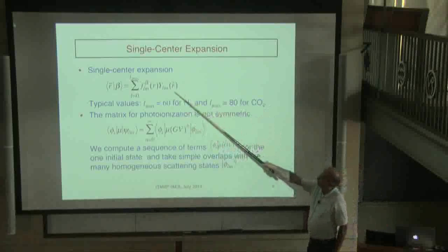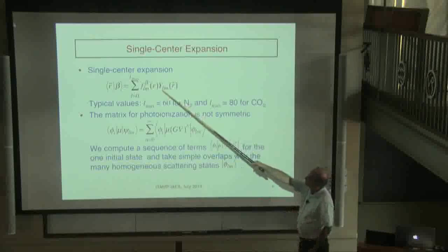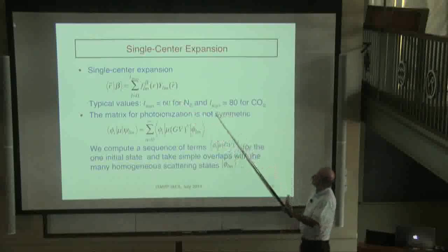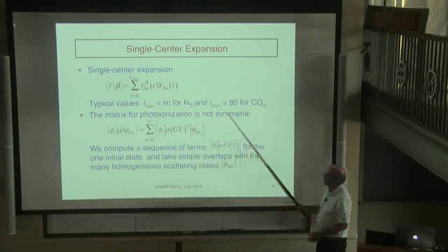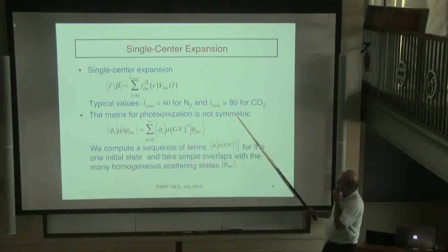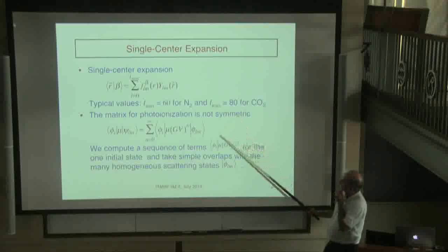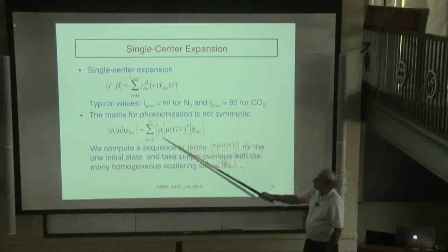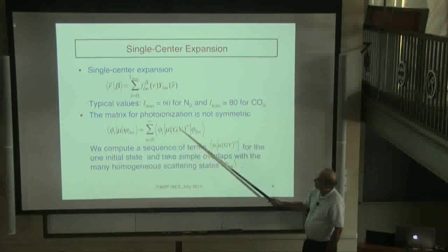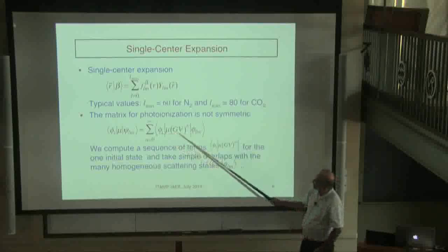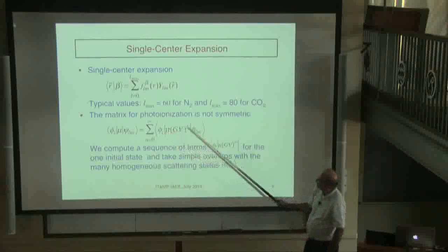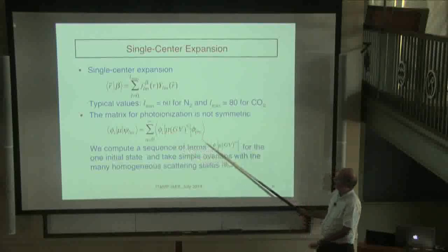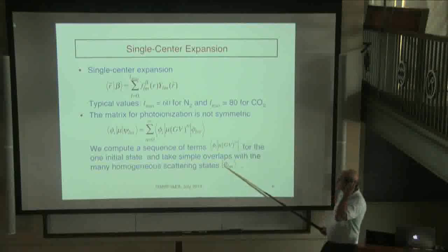In the Schwinger method, we use the fact that such matrix elements are asymmetrical, so you really only need to iterate on the number of functions you're trying to take expectations by. You can iterate this part and then multiply it by many of the different homogeneous scattering states. By going to a numerical representation for the continuum function, we can in a sense separate the basis set problem for the continuum from the basis set problem for the bound part of the problem.